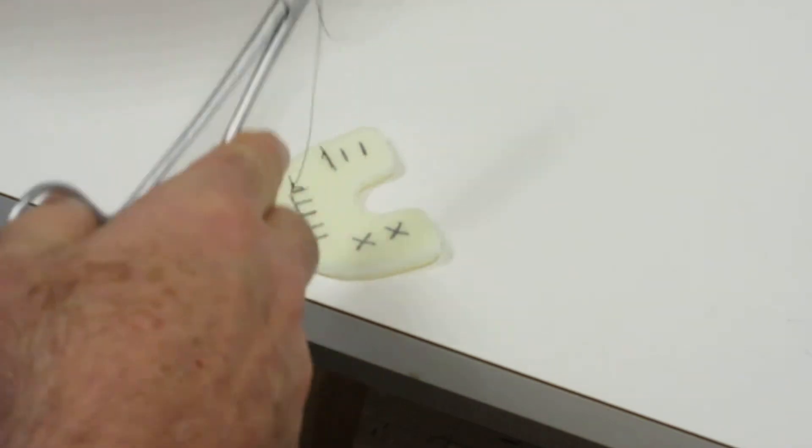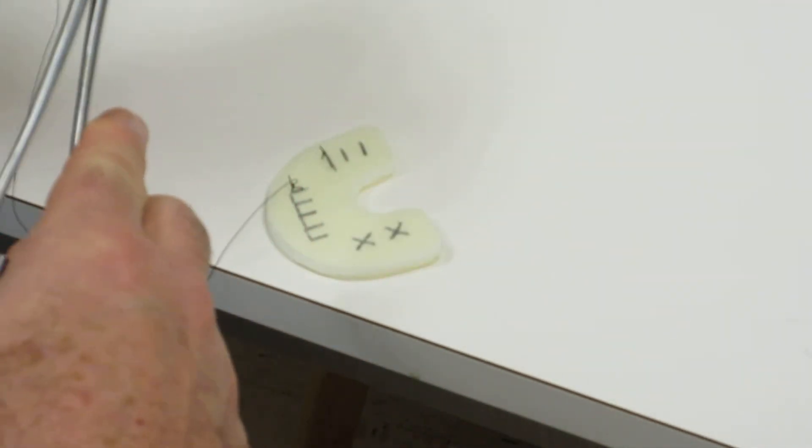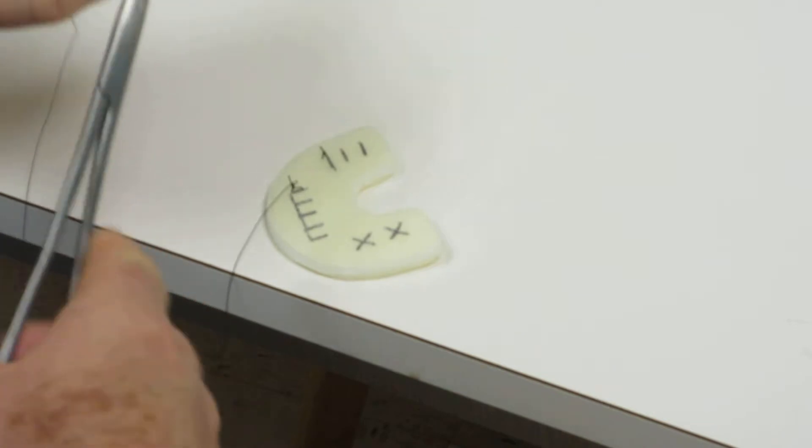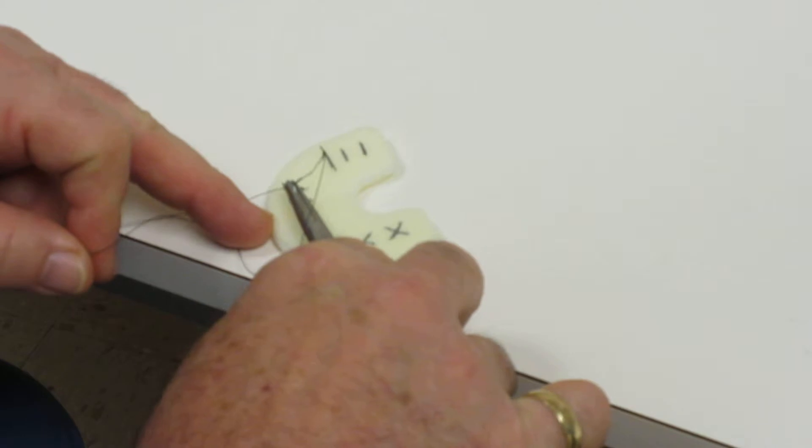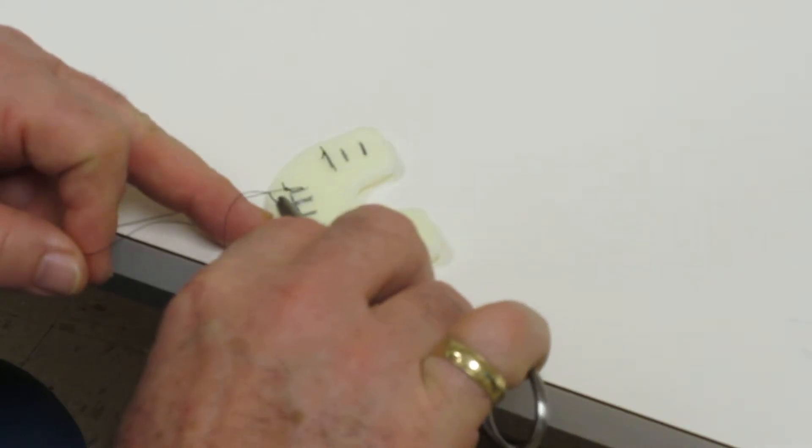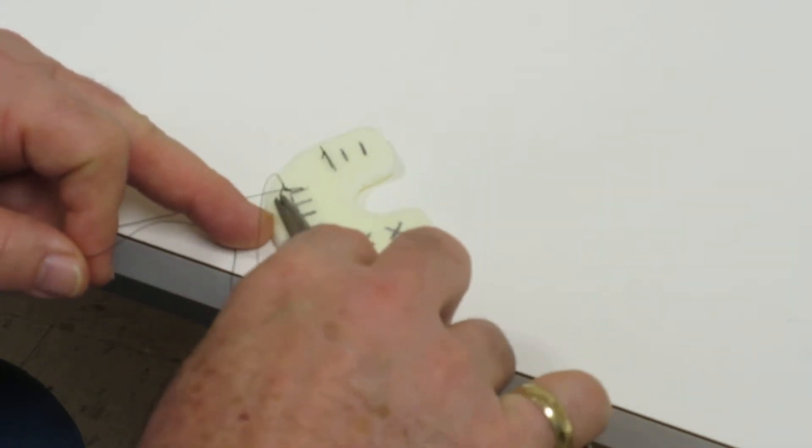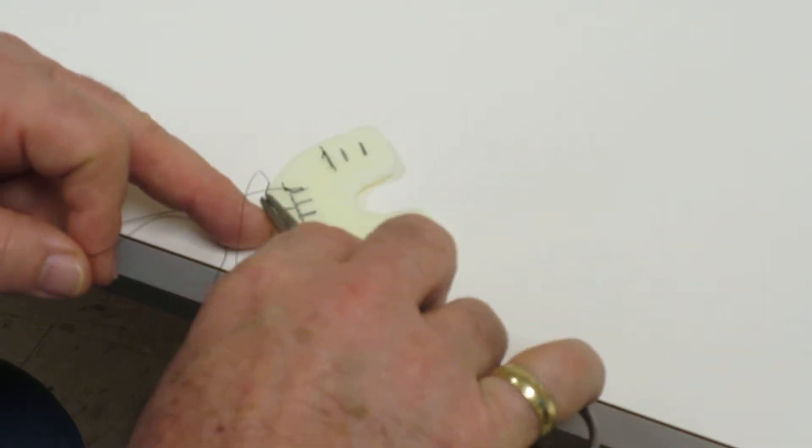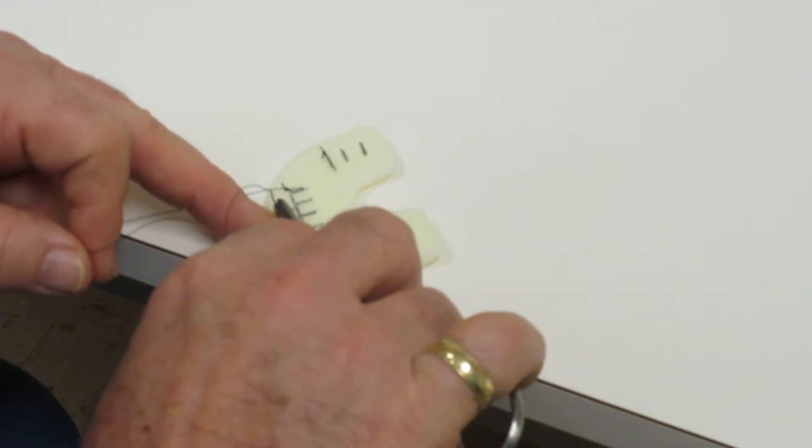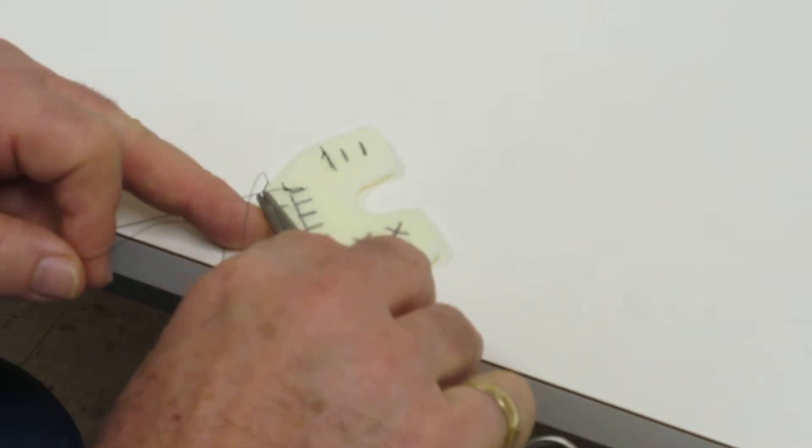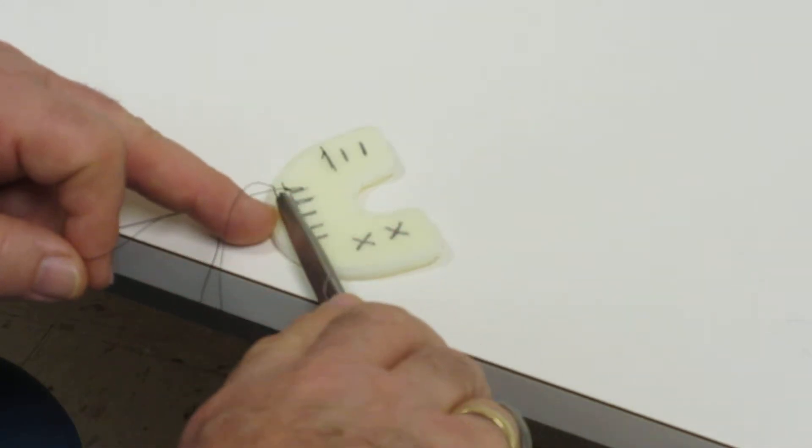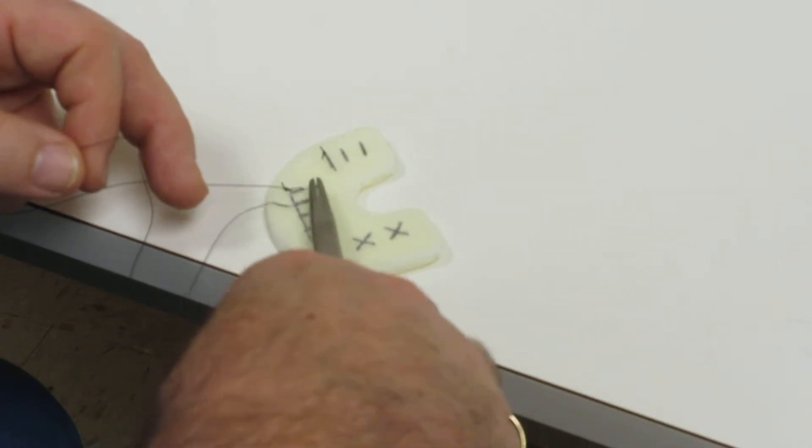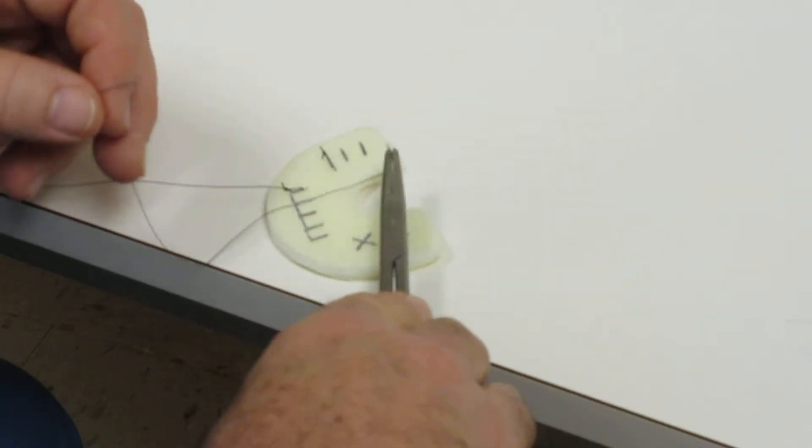You can trim that off, get it out of your way, and then it doesn't become a problem for you as you continue to go through. You can see that we've done the interrupted. Now let's go through and do the locking sutures. I've done this so many times I think I've got a cut here, so I have to find another place to put this. This is take number 15 or so.